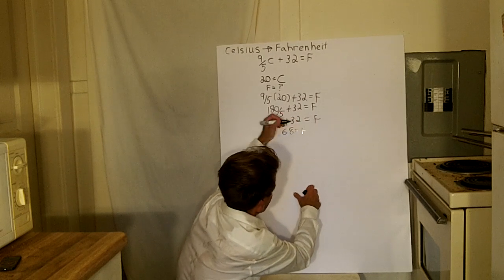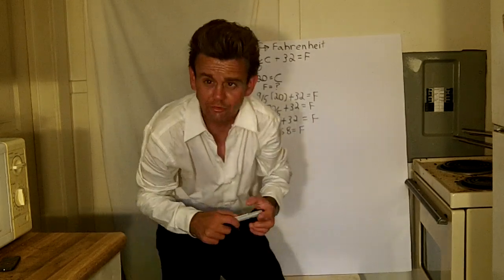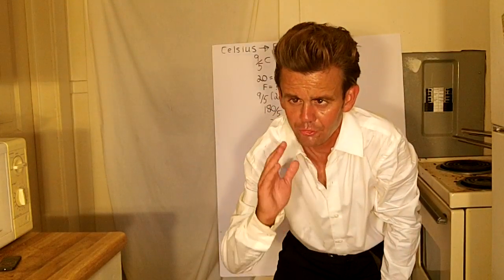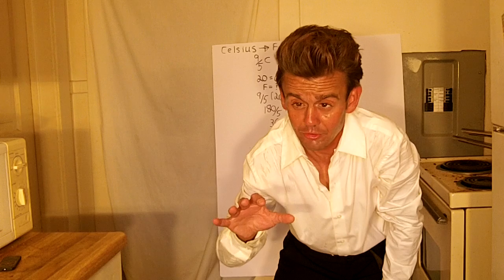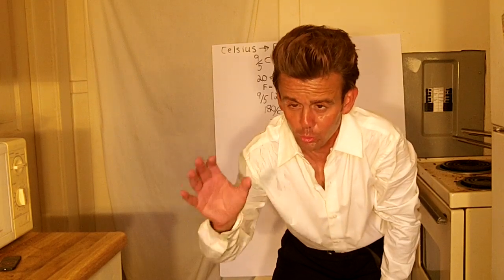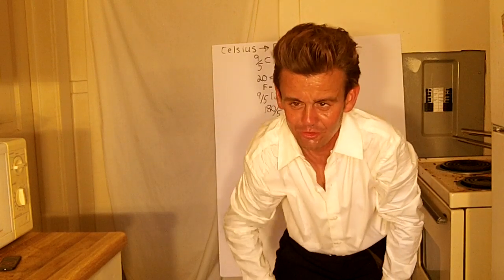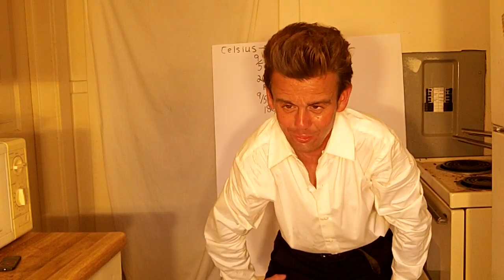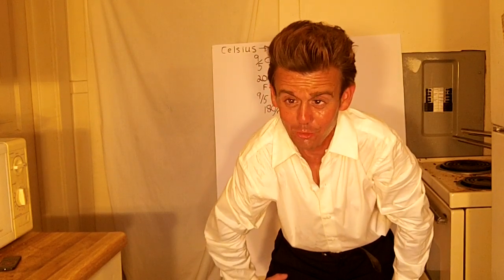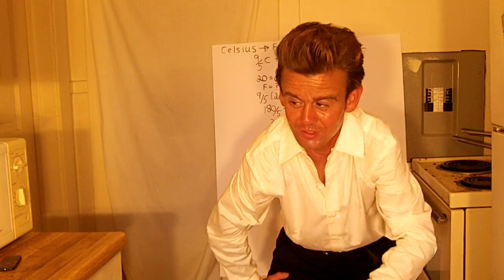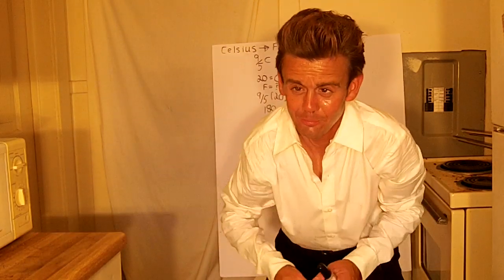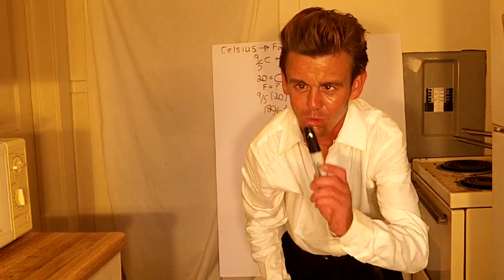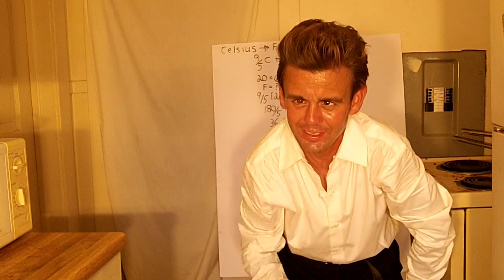So no matter what temperature it is, either Fahrenheit or Celsius, by using that formula — 9 fifths of C plus 32 equals F — you can look at the temperatures of where you are or where you want to go and get the accurate temperature. For a math geek like myself, I always found that to be a fun little trick. I hope you like that. Please don't forget to like my video and subscribe to my channel. I do my videos on Wednesdays, and I hope you have a wonderful day.